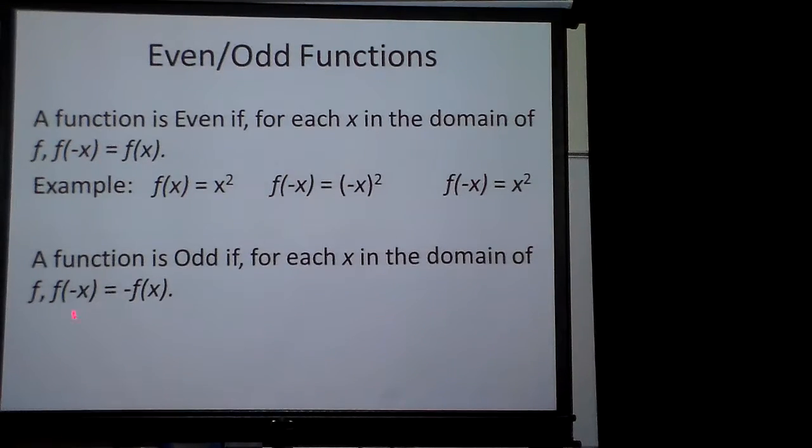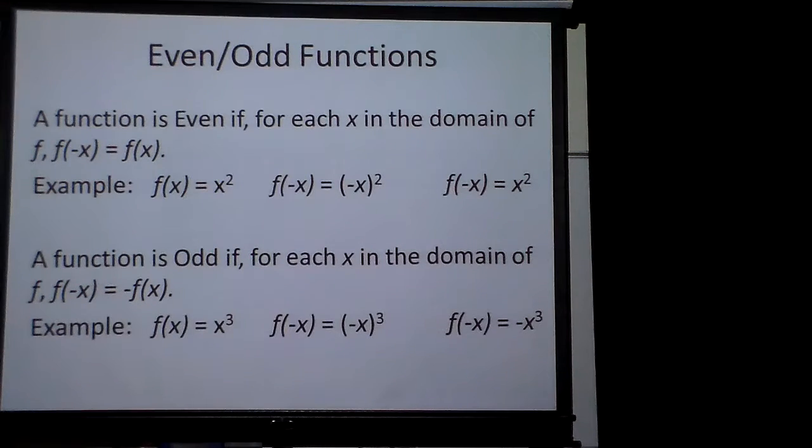So an odd function does this: if you make the value negative, it makes the whole thing negative. An example of this would be x cubed. Look, I start with this right here—there's my original function. If I change it to a negative x in here, that's what it's saying, just changing to a negative x in there,